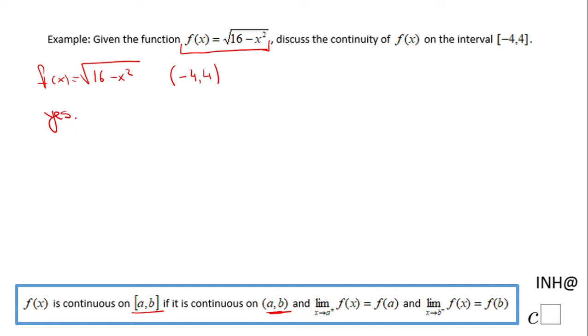Because there is no value between -4 and 4 that makes any issue with this radical, like a negative value. Any number between -4 and 4 will make the quantity inside the radical positive, so it makes sense.